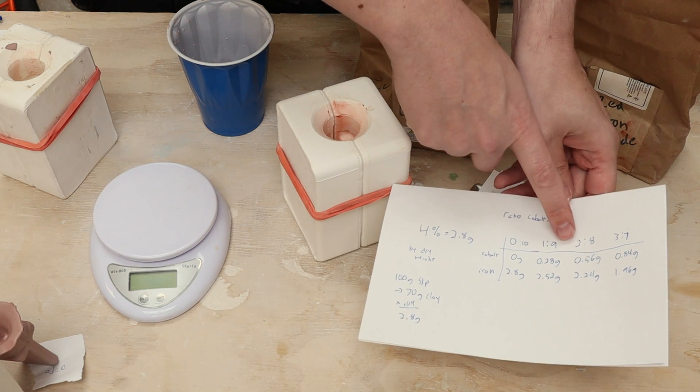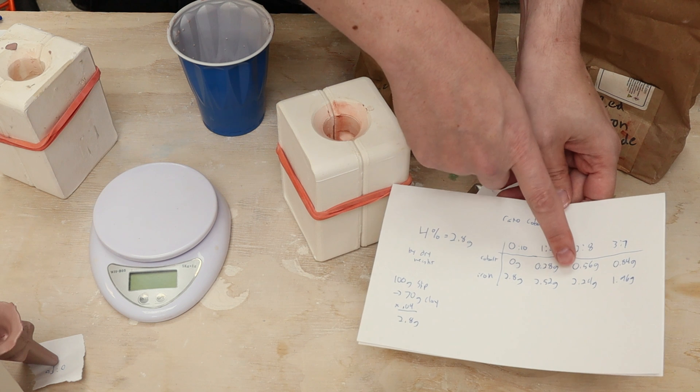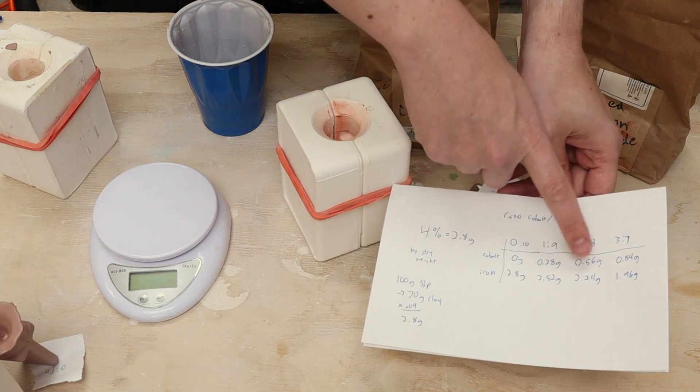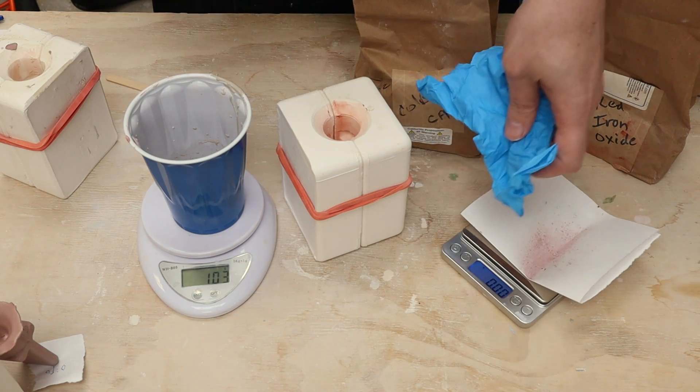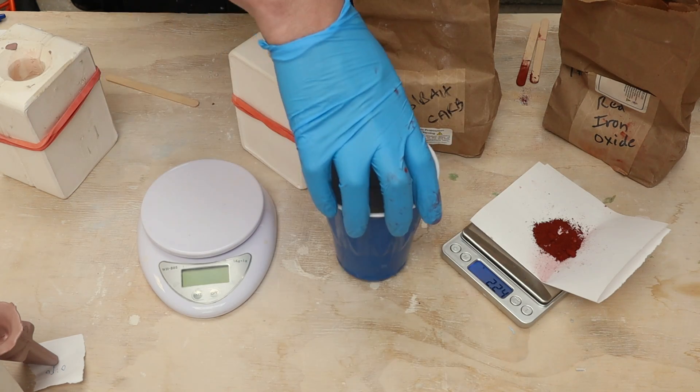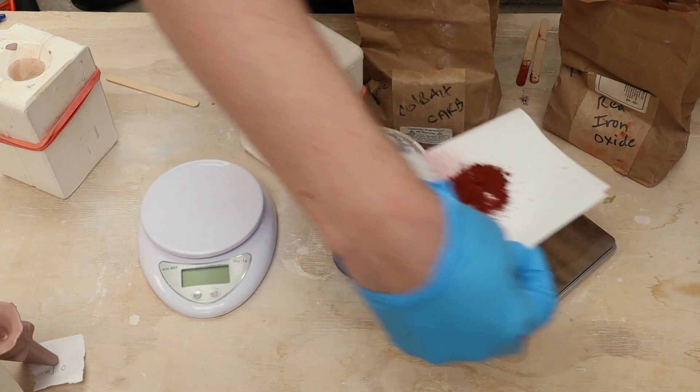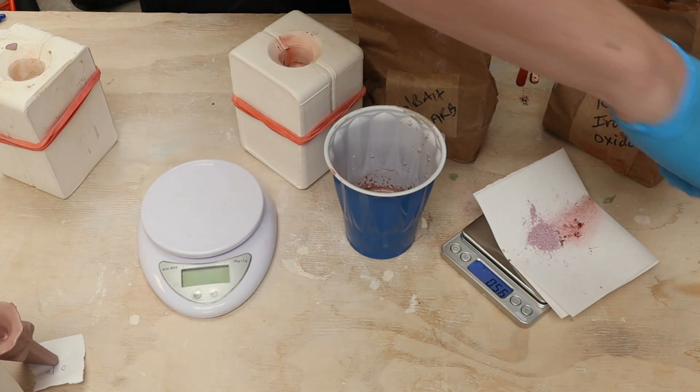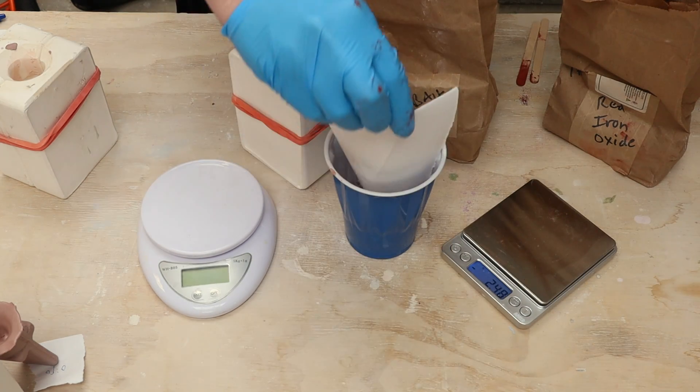Next up is two parts of cobalt to eight parts of iron, so we need 0.56 grams of the cobalt and 2.24 grams of the iron. And the iron oxide was getting everywhere, so I'm going to go ahead and put on a glove.